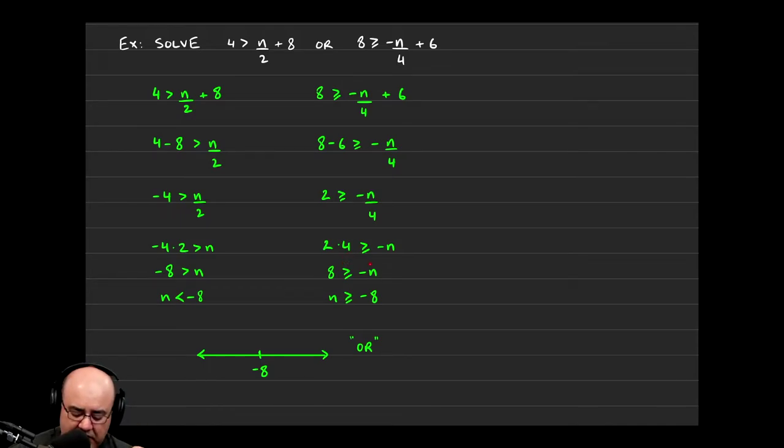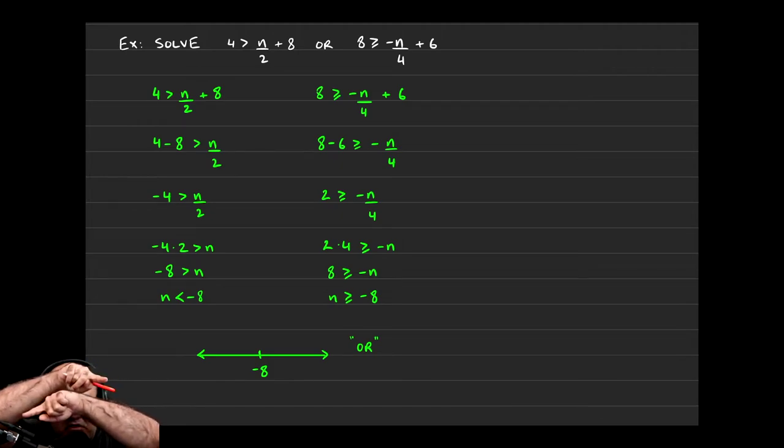Or what I'm actually doing here is just moving the negative n over to this side, which would turn it into a positive n, and taking the 8 and subtracting it over to the other side, turning it into negative 8. So all I'm doing is just making the terms on either side of the inequality go to the other side.